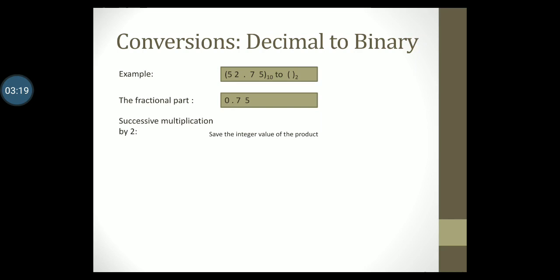So we start by taking 0.75, the fractional part of the decimal number, and multiply it by 2. The product is 1.50. We record the integer part of the product, which is 1.